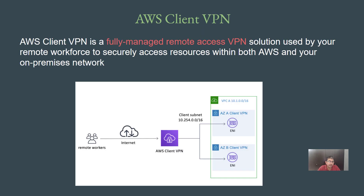The benefit of AWS Client VPN is that it is a fully managed remote access VPN solution. So instead of creating an EC2 instance, launching the OpenVPN Access Server, and taking care of licenses, performance optimization, and security, all you do is configure Client VPN in AWS and the AWS team takes care of everything for you. Before we explore other areas related to Client VPN, let's do a quick demo to see how it looks.